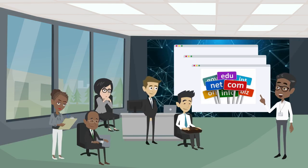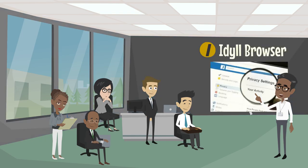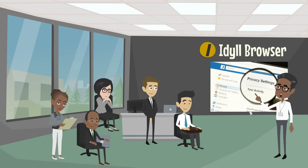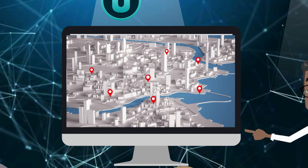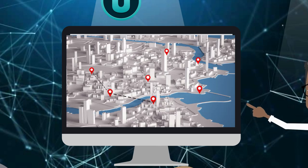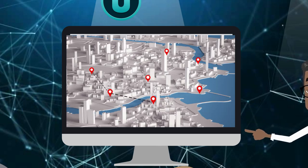On Utopia, you can access only those websites which are registered on Utopia's network, and that too within Utopia's built-in browser. This is for privacy and security. You also use maps — but on Utopia's UMAP, you can find different channels and join any channel, which is amazing.